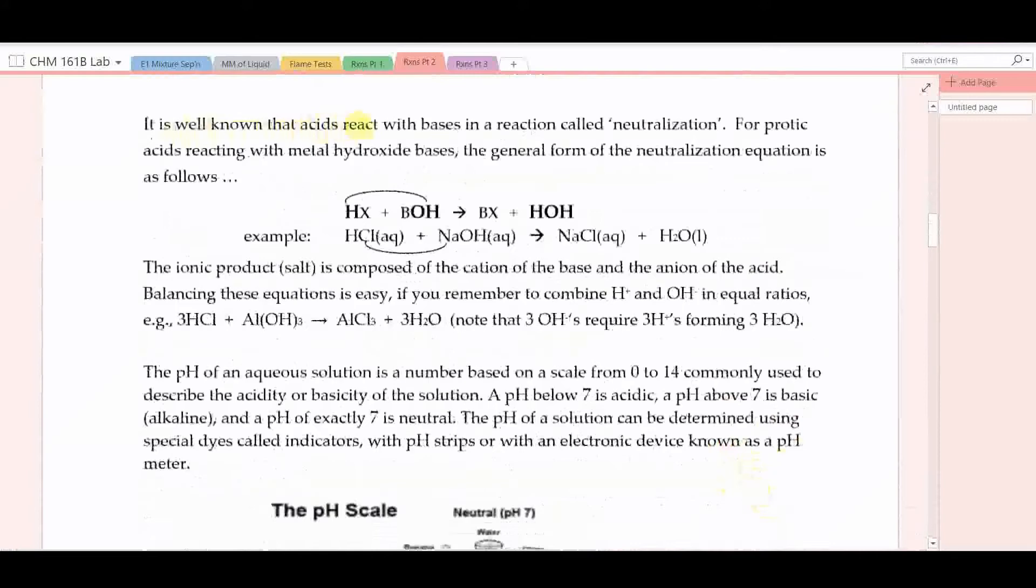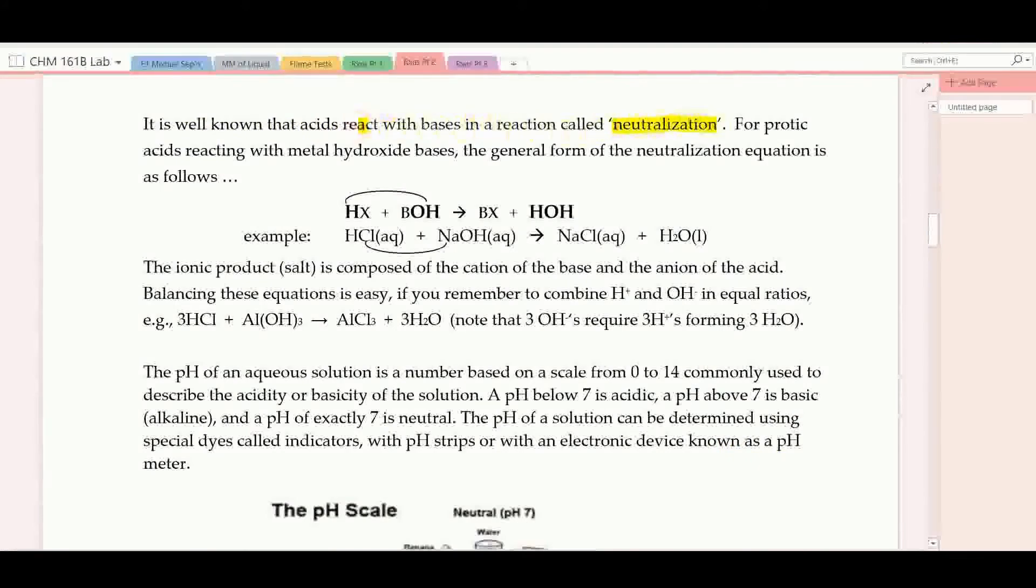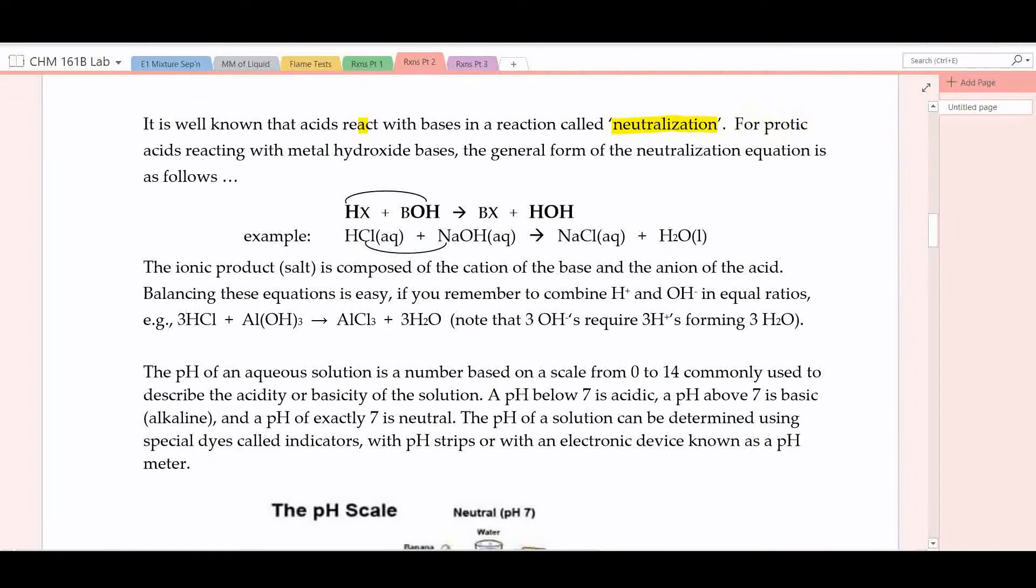Now, it's well known that acids react with bases in a reaction called neutralization. And for protic acids reacting with metal hydroxide bases, the general formula for neutralization is shown here. Here's the generic form. HX plus BOH produces HOH water and a salt. Probably easier to see if we take a specific example. Here's hydrogen chloride, or HCl, plus sodium hydroxide. So the hydrogen ion and the hydroxide ion combine to make water. The cation from the base, in this case sodium ion, and the anion from the acid, in this case chloride ion, combine to produce a salt.